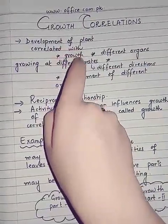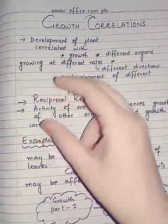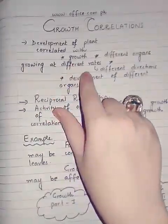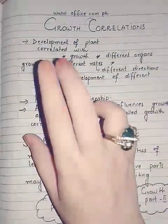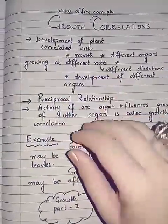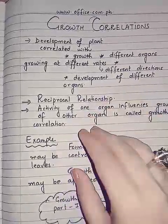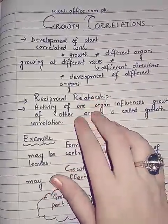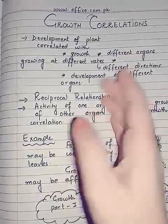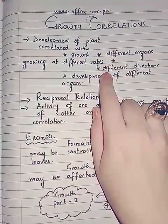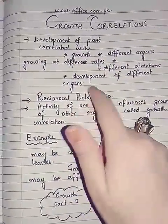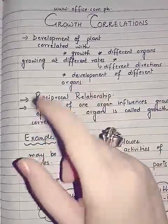The development of one part of the plant is related with the growth of the other part. Different organs will grow at different rates depending upon this relationship — if one part is growing at a faster rate, whole of the nutrition will be used by that part and the other parts will become devoid of nutrition, hormones, or vitamins, and their growth will be retarded. Some will grow faster, the rest will grow slower, and their direction of growth will also be different.